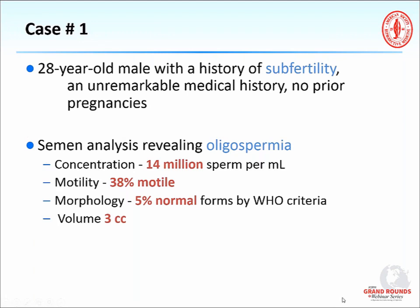The first case is a 28-year-old male that comes into your office with a history of infertility. He has an unremarkable medical history and has had no prior pregnancies. His semen analysis shows oligospermia, a concentration of 14 million sperm per cc, which is less than the 15 million established by the WHO, a motility of 38 percent, again less than 40 percent established by the WHO, morphology is 5 percent and that is normal, and the volume is 3 cc, also within normal limits.